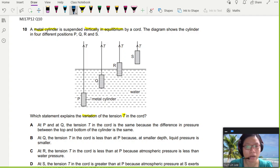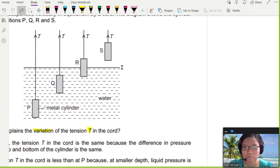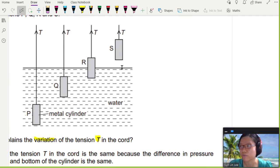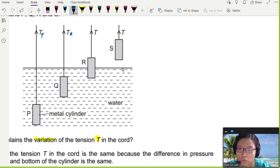To make our life easier, I'm going to label all these T's slightly differently. So let's say this is TP, TQ, TR, and TS.